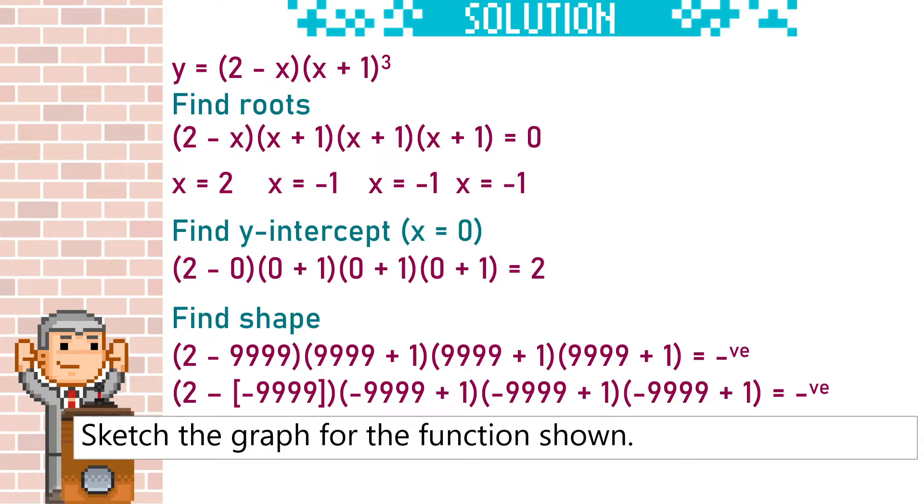Notice that this has a triple-repeated root. A double-repeated root would make it skim the x-axis, but a triple one makes it want to skim it, but also cross it. So it looks something like this at x equals minus 1. You can see it sort of going horizontal there, but still crossing the axis. And then x equals 2 is just a normal root. The y-intercept will be 2, so we need to make sure we label that as well.